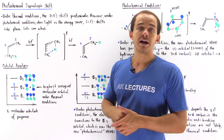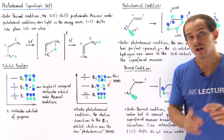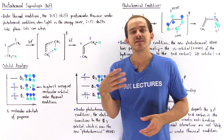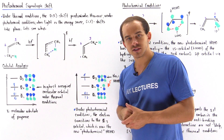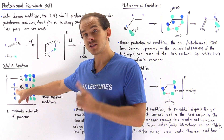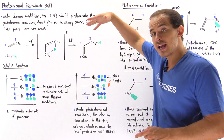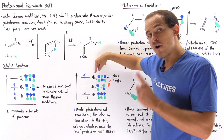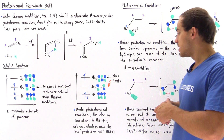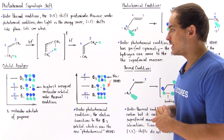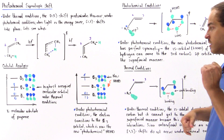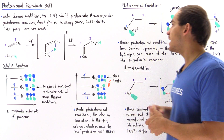So phi 2 is the highest occupied molecular orbital, the HOMO, under thermal conditions. But what happens under photochemical conditions when the energy source is light? Basically, we shine light onto our system and this electron gains enough energy — if the frequency of light is just high enough — and it transitions into the higher energy orbital, phi 3. So in the photochemical case, the new highest occupied molecular orbital, known as the photochemical HOMO, is phi 3. Under thermal conditions it's phi 2 that acts as the HOMO, but under photochemical conditions it's the phi 3 pi molecular orbital.